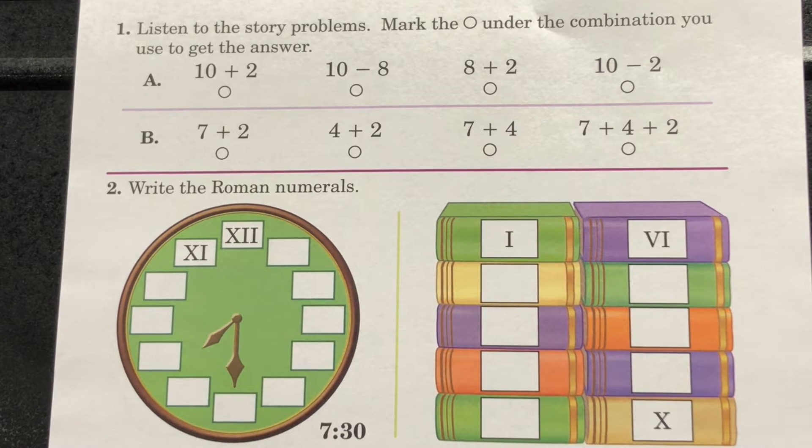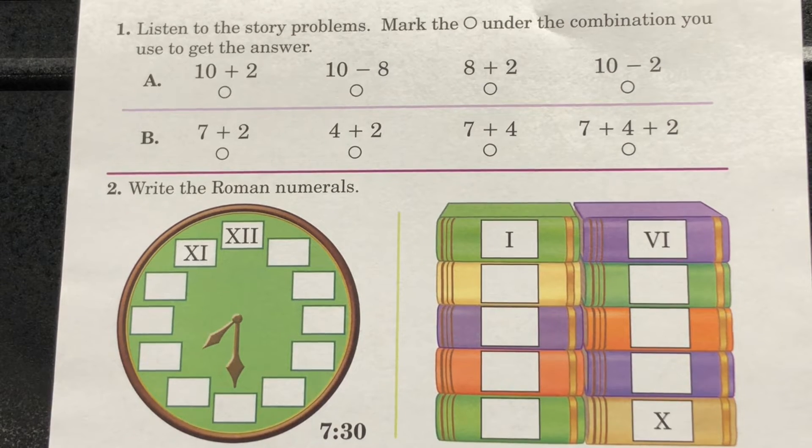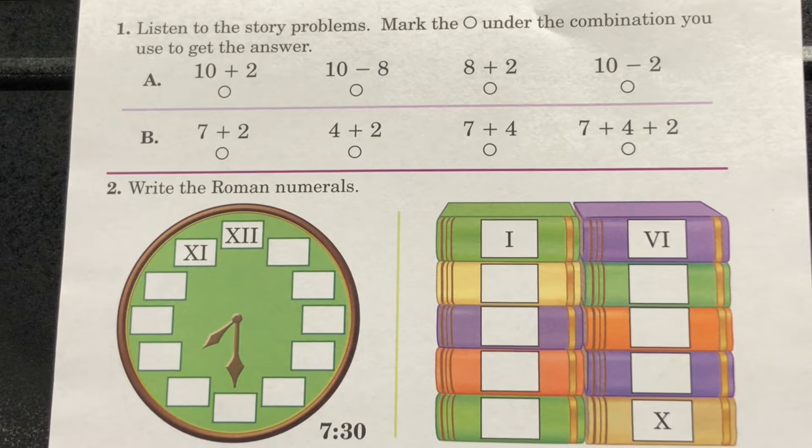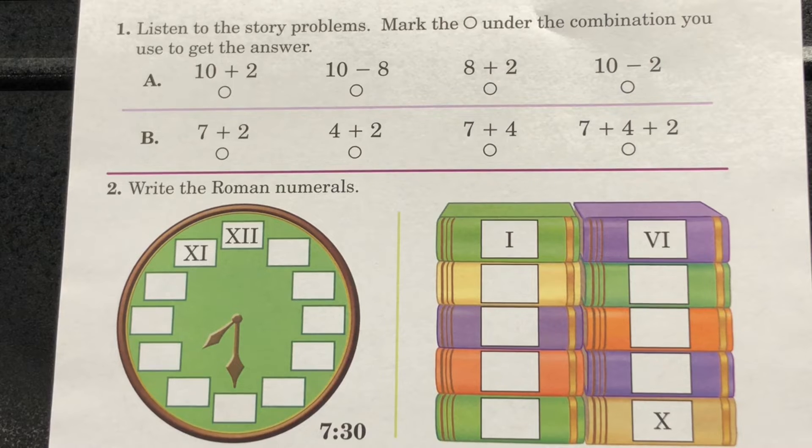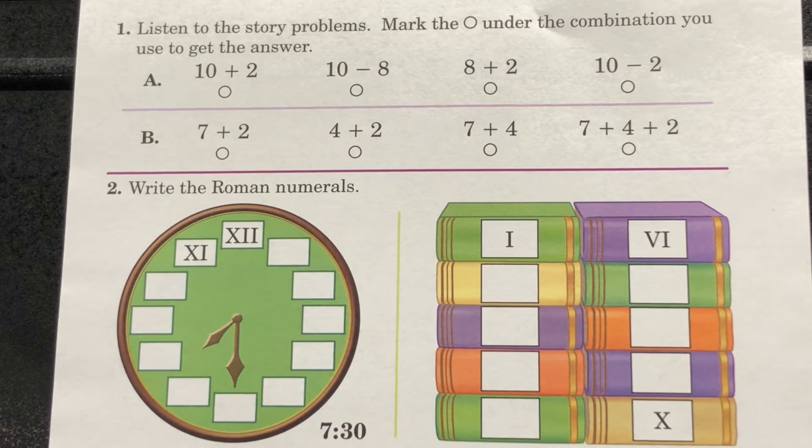Take a look at section 1. Listen to the story problems. Mark the circle under the combination you use to get the answer. A. Summer invited 10 friends to her birthday party. Two friends could not come. How many friends came to summer's party? B. Olivia ate seven crackers and four apple slices and drank two glasses of juice. How many pieces of food did she eat?